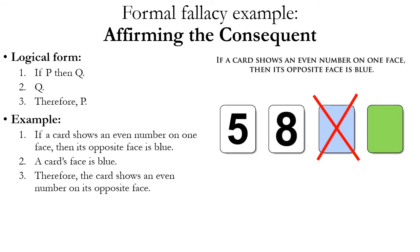Here's the same fallacy illustrated with the Wason selection task: if a card shows an even number on one face, then its opposite face is blue; this card's face is blue; therefore the card shows an even number on its opposite face. If you thought we had to turn over the blue card to check for an even number, you were committing this fallacy. It's much harder to spot in this non-social context. This may suggest our reasoning ability evolved to detect social rule-breaking rather than abstract logical violations.